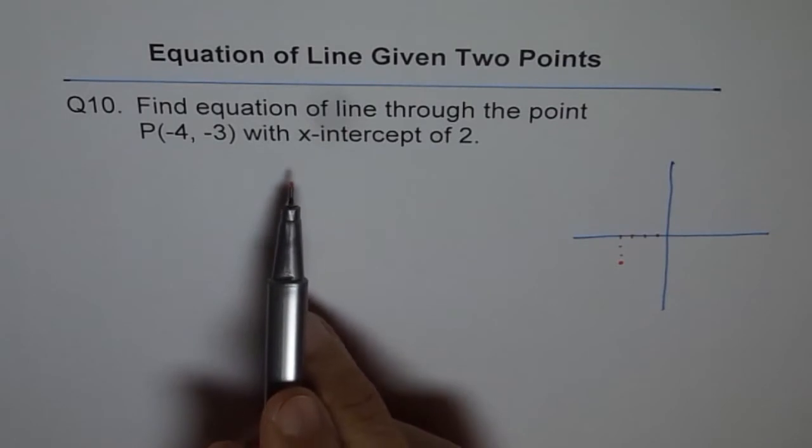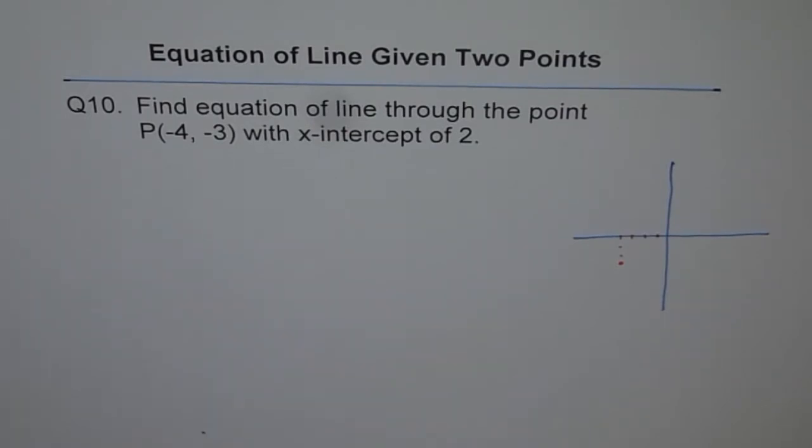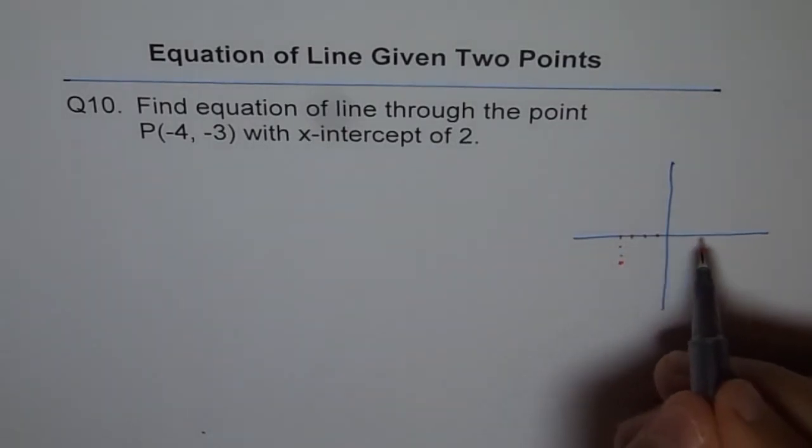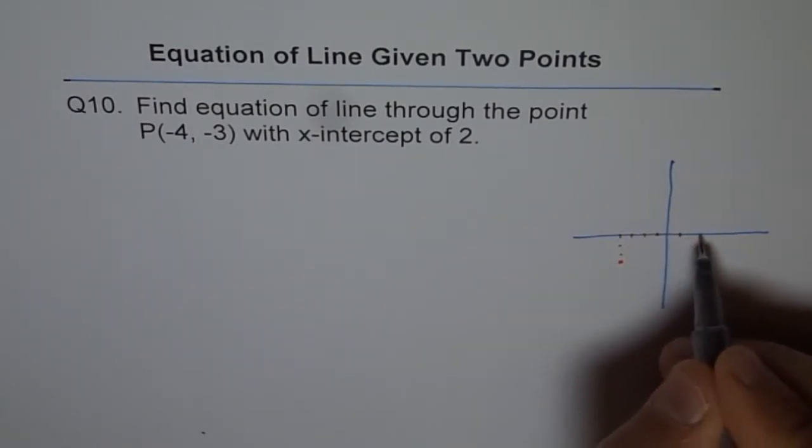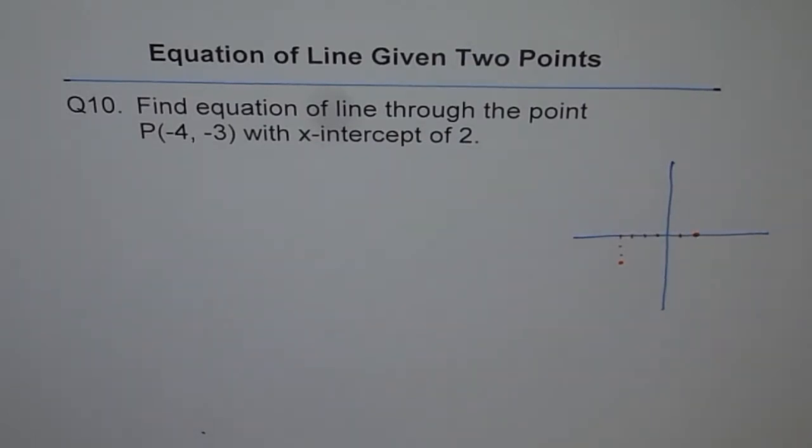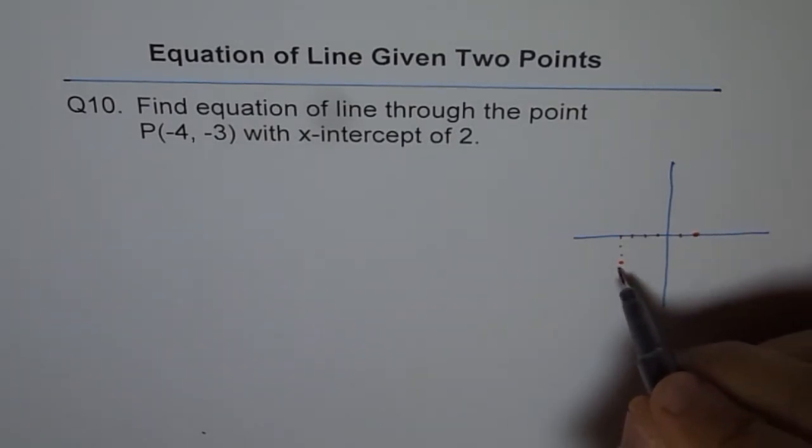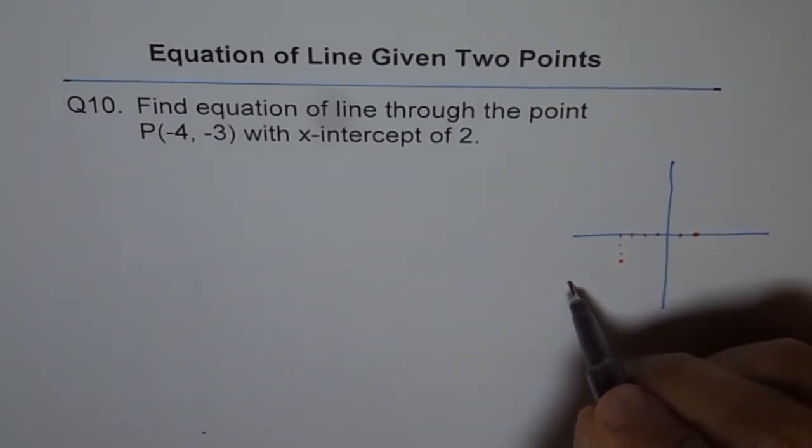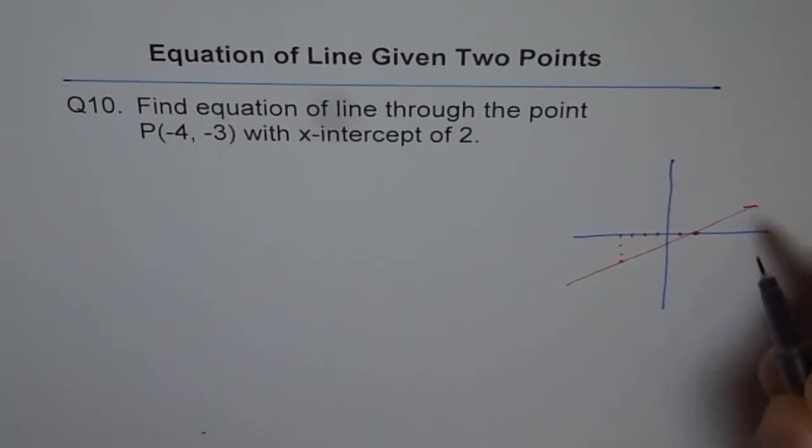That's the point P. And x-intercept of 2 means, well, x-intercept means line crossing x-axis at point 2. Okay. That makes sense. So 1, 2. So that is the point which we are calling as x-intercept of 2. So let's join these two points and extend our line. So there we go. That's the line.